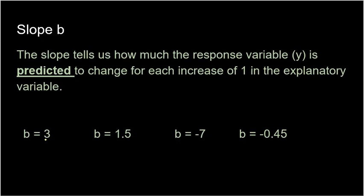Let's practice. If your slope is 3, make it a fraction — slope is y over x. This tells me the response variable will increase by 3 units for each increase of 1 in the explanatory variable. Even if the slope is a decimal, put it over 1. For example, a slope of 1.5 means the y response variable will go up by 1.5 units as the explanatory variable increases by 1 unit.